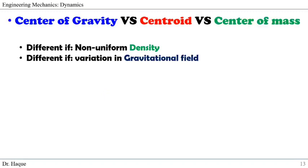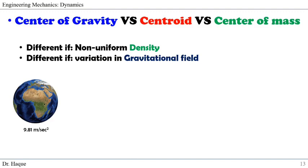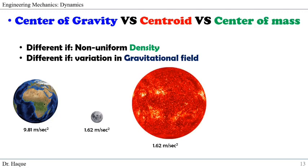Now we're going to see how center of gravity, centroid, and center of mass can all be different. They can be different if you have non-uniform density, as we just discussed. They can also be three different points if there is a variation in gravitational field. On Earth the gravitational acceleration is 9.81 m/s². If you move to the Moon it's 1.62 m/s², to the Sun it's 274 m/s², and on Mars it's 3.71 m/s². All these changes in gravitational field will also affect the center of gravity. In these cases, they can all be different points.